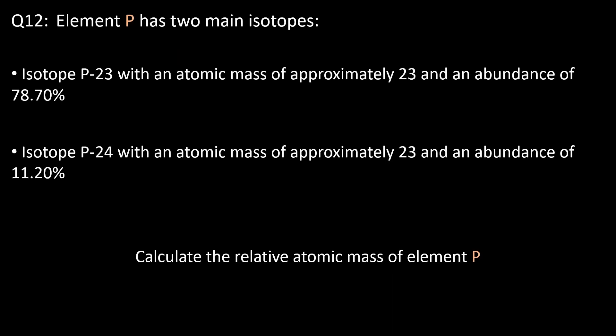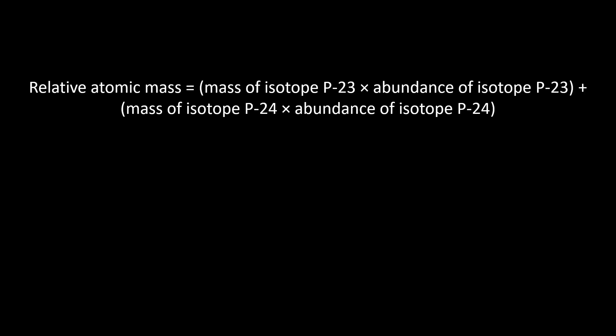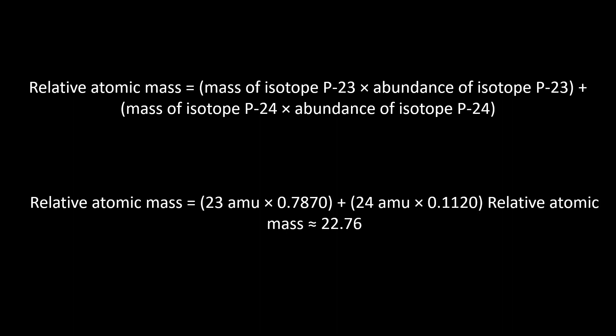Question twelve: element P has two main isotopes — isotope P23 with an abundance of 78.70% and isotope P24 with an abundance of 11.20%. Calculate the relative atomic mass of element P. Using the equation discussed before, we multiply the mass of each isotope by its respective abundance and sum them: 23 × 0.7870 plus 24 × 0.1120, which equates to approximately 22.76.